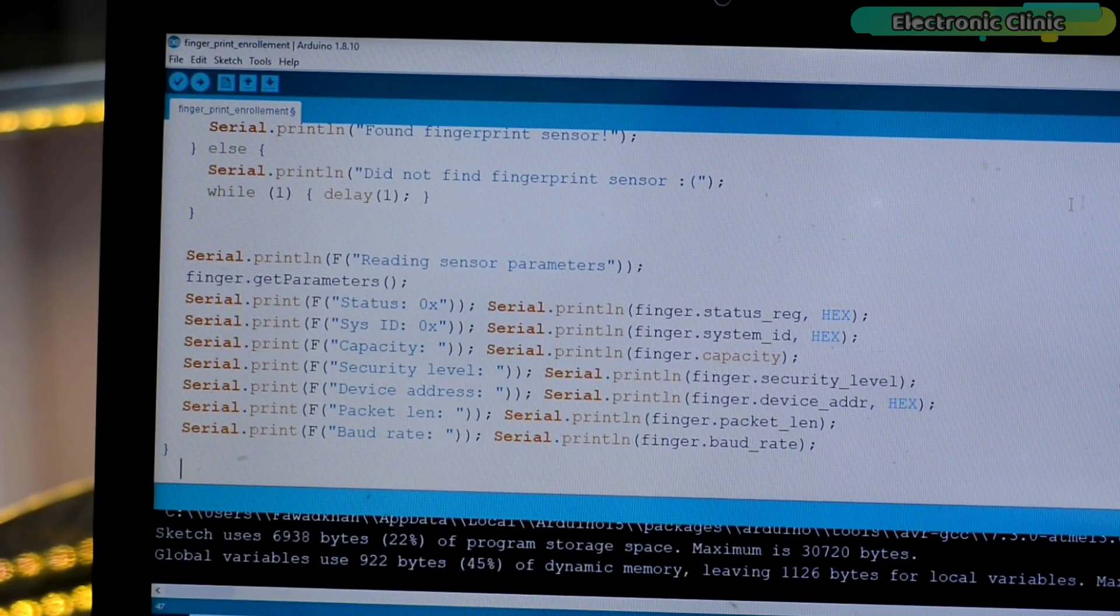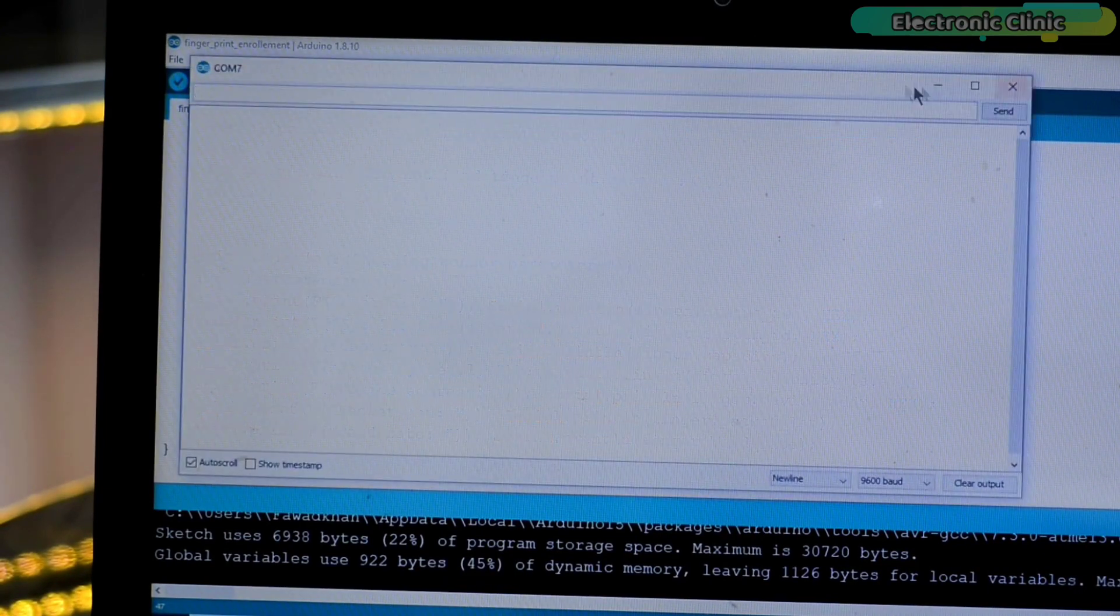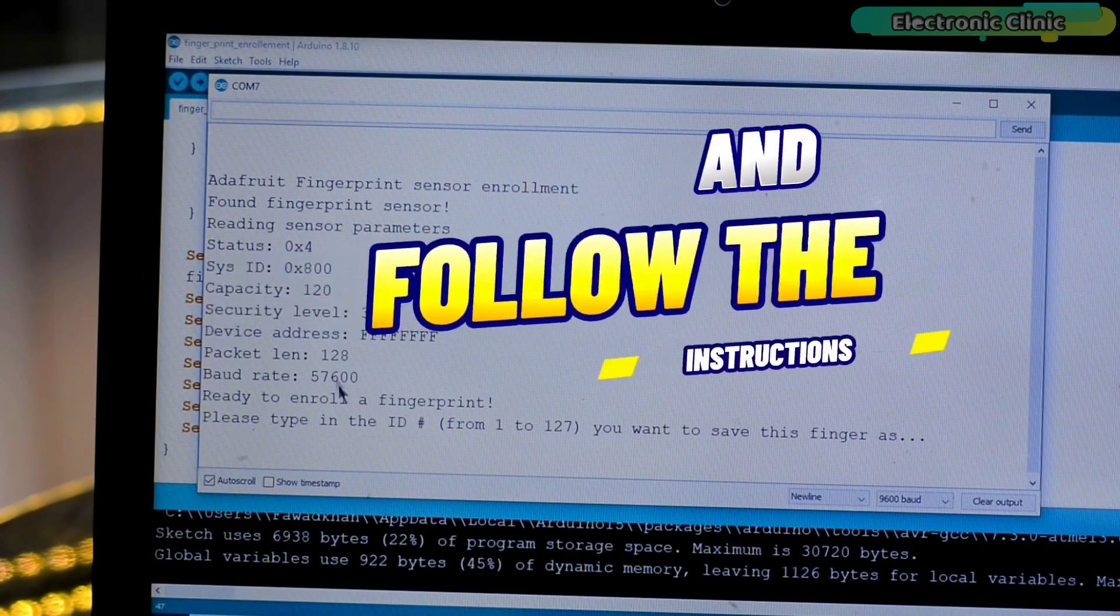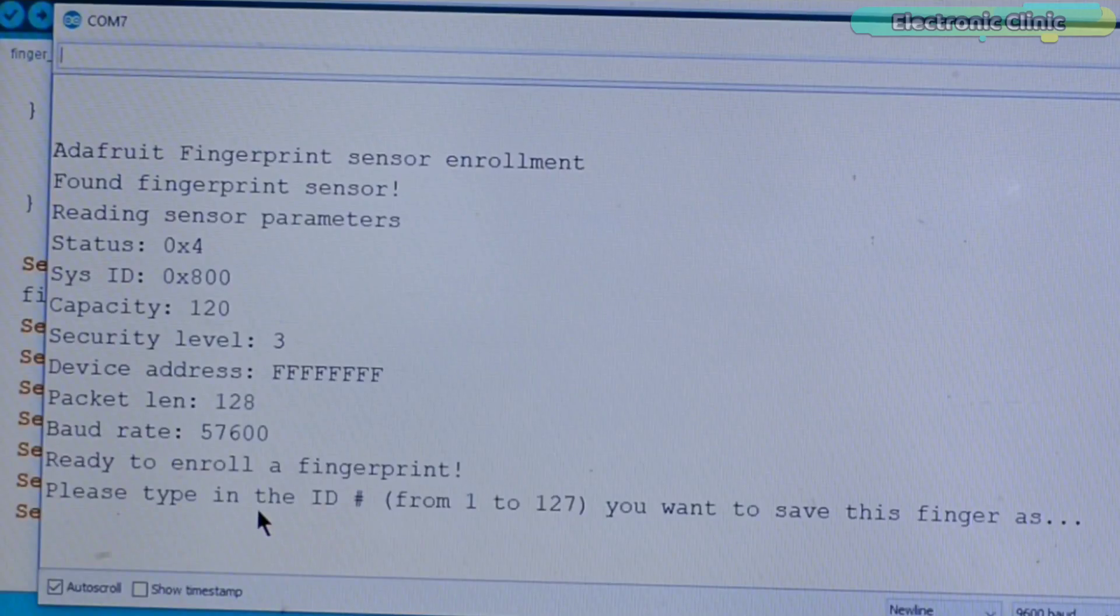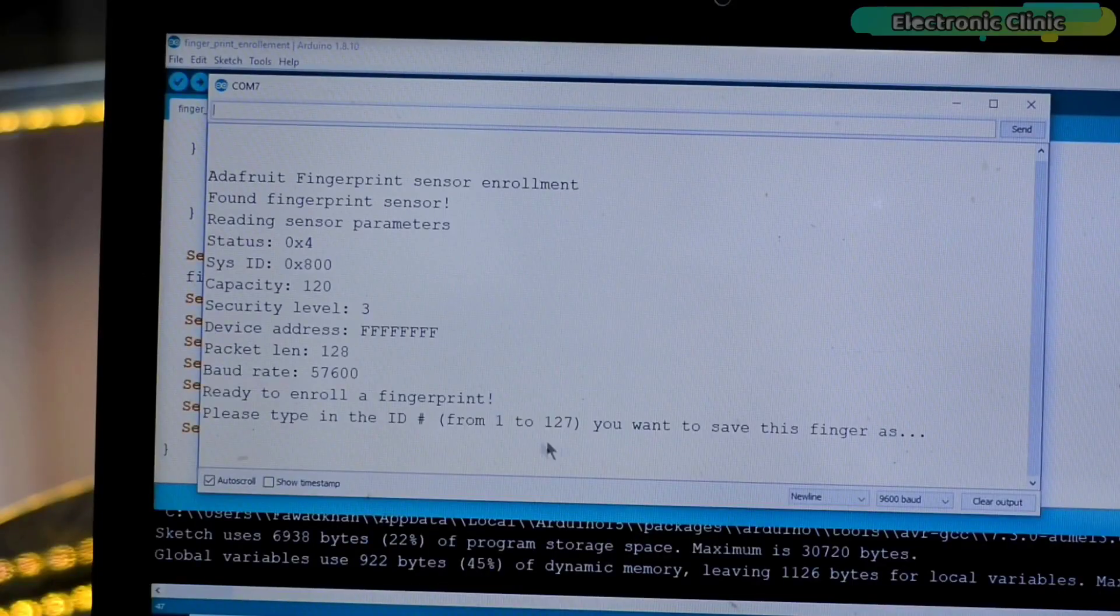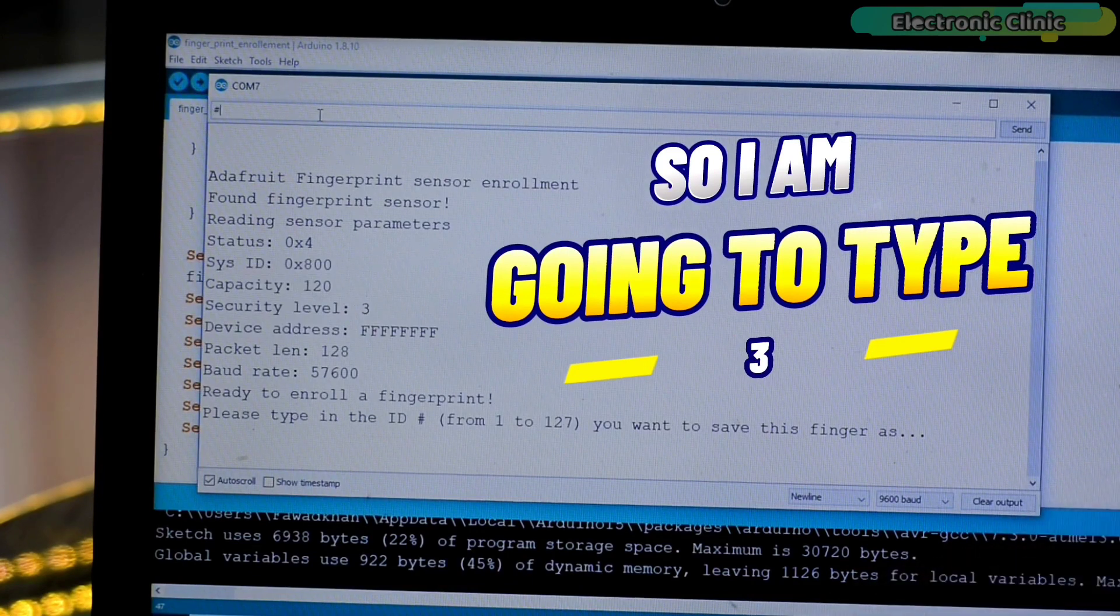Next, open the serial monitor and follow the instructions. Right now it's saying please type in the ID number from 1 to 127 you want to save this finger as. So I'm going to type 3.